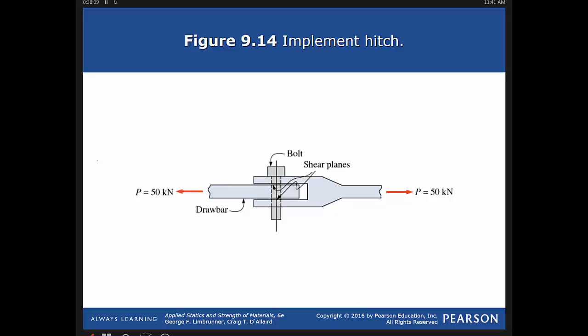To find the area, it's the force divided by the allowable shear stress. The allowable shear stress was 7,500 psi. We're given that it's 20,000 pounds, but since you've got two of them, you divide it by two.